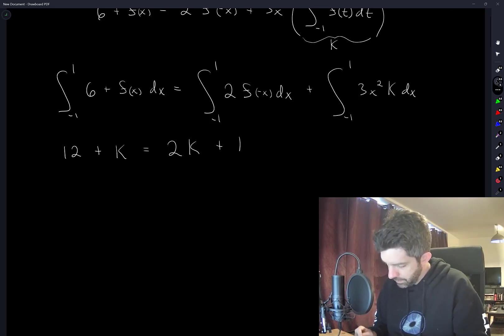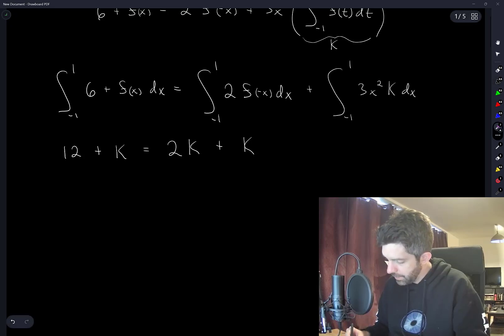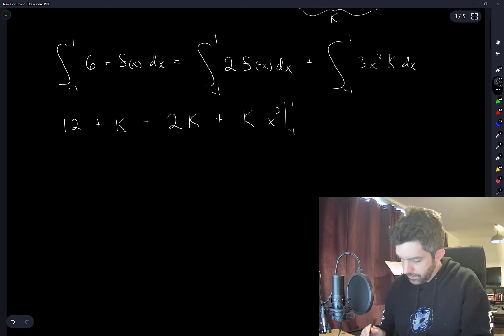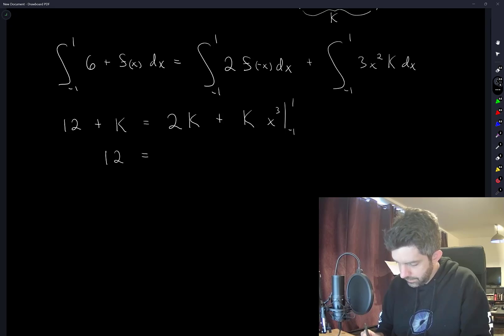And here we have... I'll write it like this. So this gives us 12 = k + k × (1 + 1), which means 12 = 3k. Therefore, k = 4.